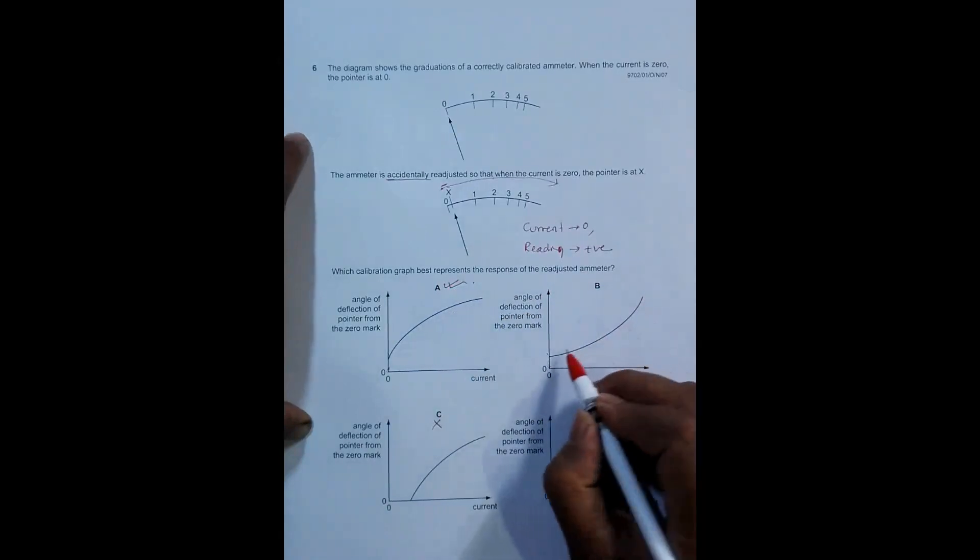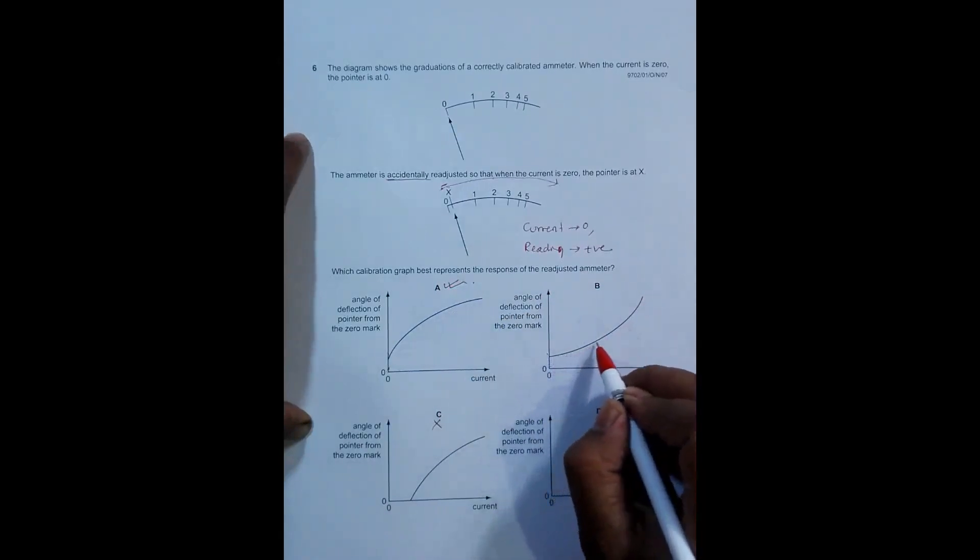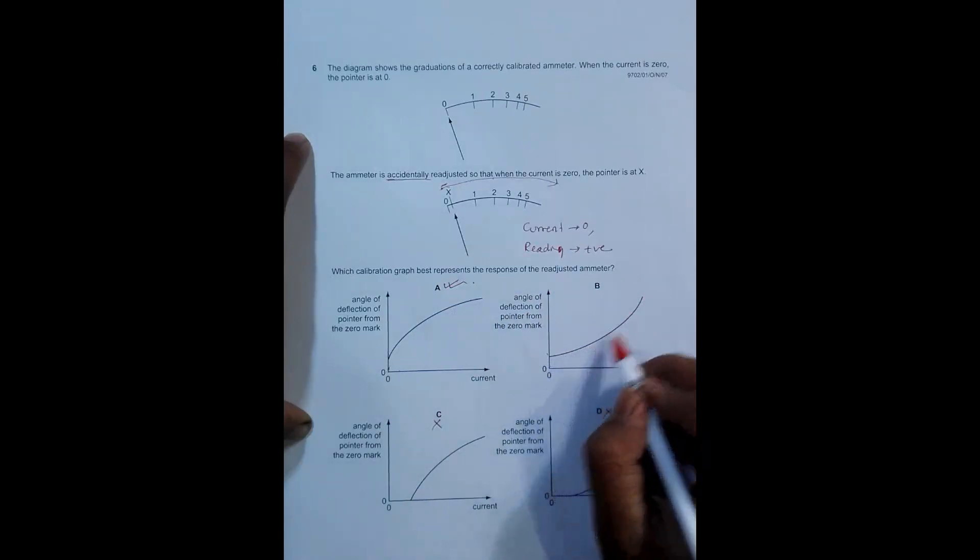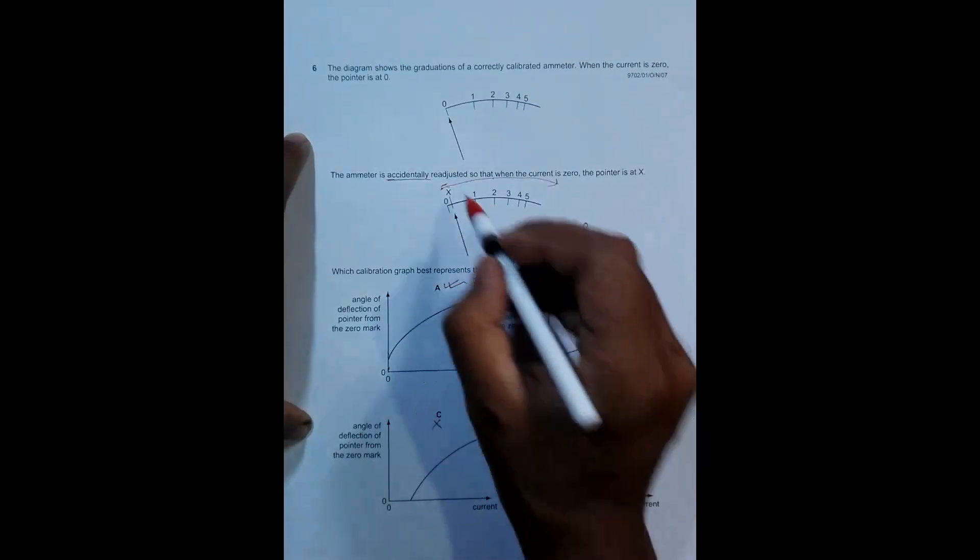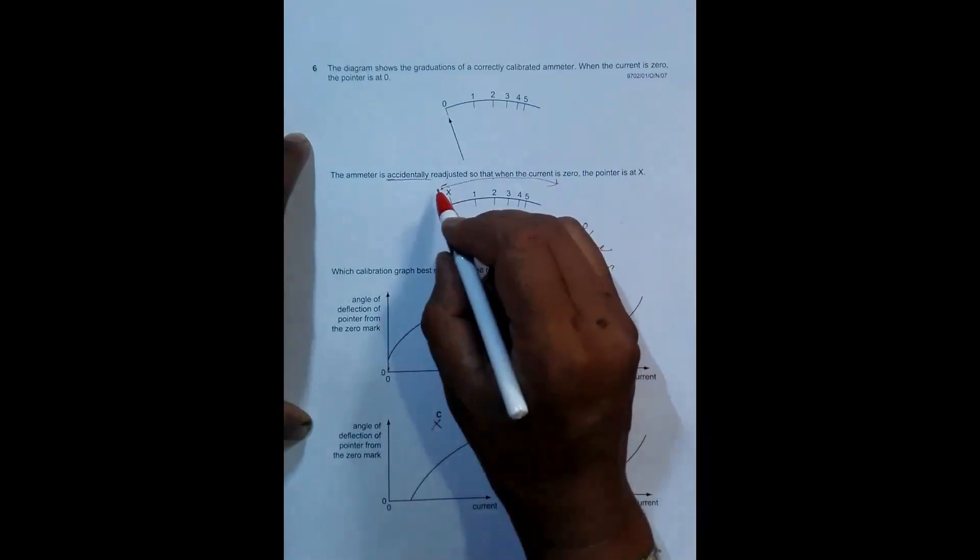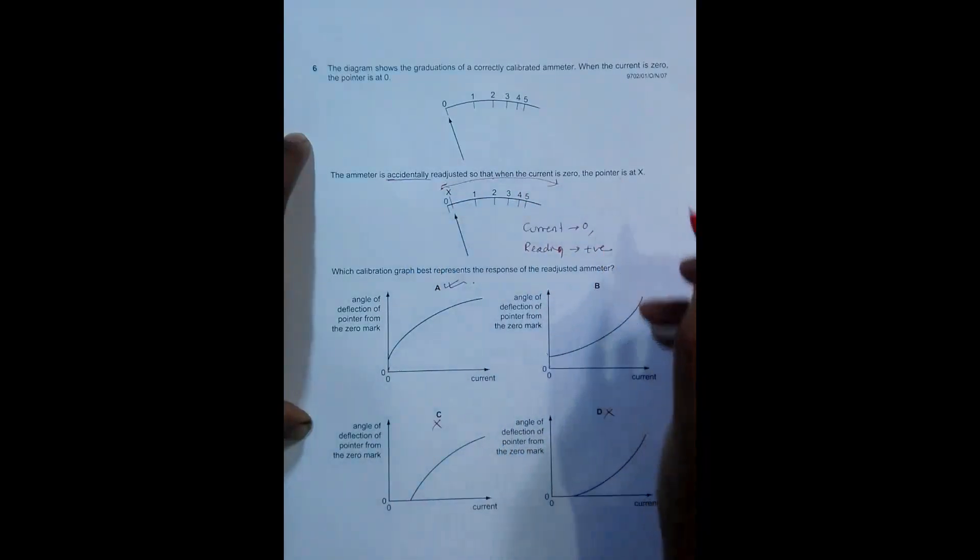But in choice B, as the current increases, the degree of increase goes on increasing, the rate of increase goes on increasing, which is not according to what is shown by this calibrated ammeter. Choice A is correct and choice B disqualifies.